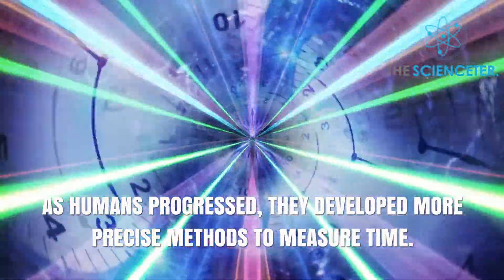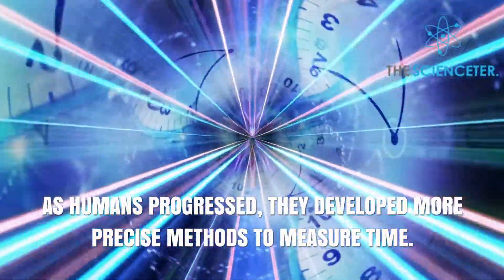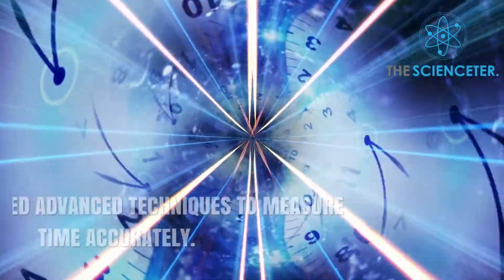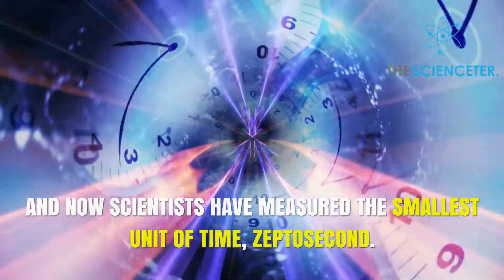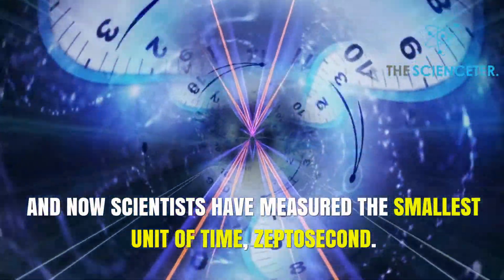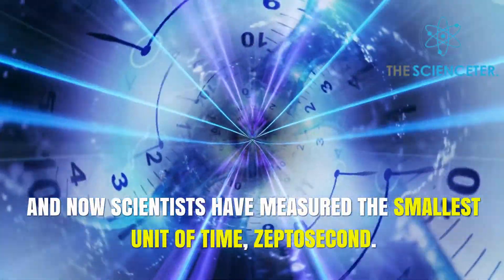As humans progressed, they developed more precise methods to measure time. They developed advanced techniques to measure time accurately. And now scientists have measured the smallest unit of time, called zeptosecond.